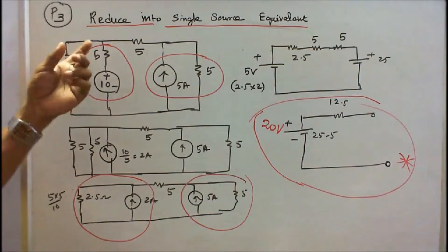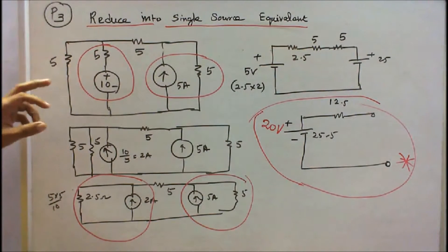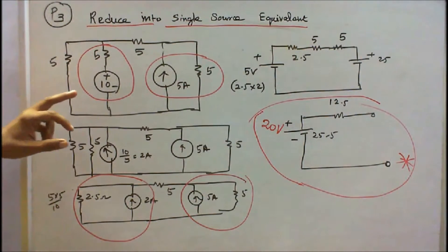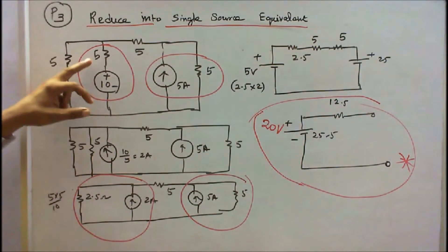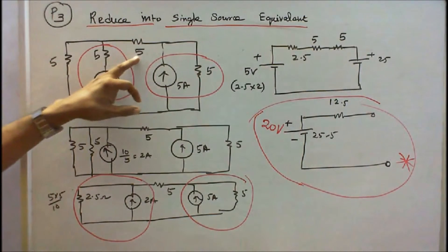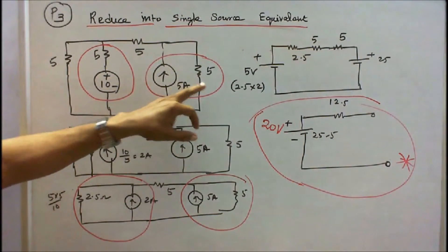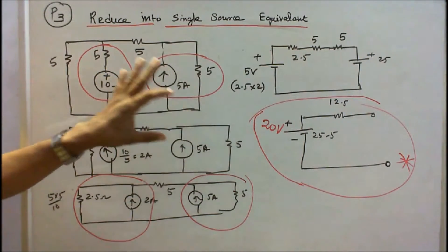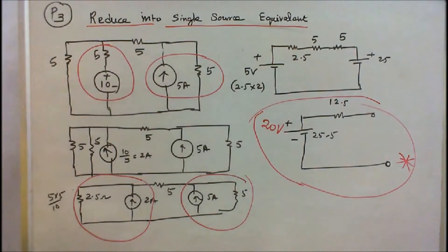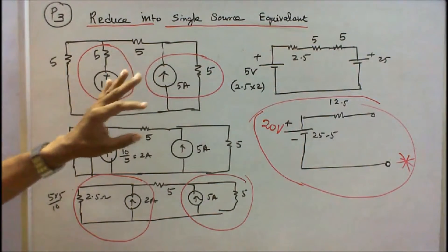Problem number 3. In this problem, there is a 10 volt battery and 5 ohm resistors: this is 5 ohm, this is 5 ohm, this is 5 ohm, this is 5 amps current source, and this is 5 ohm. This is the network I have to convert into a single source equivalent.